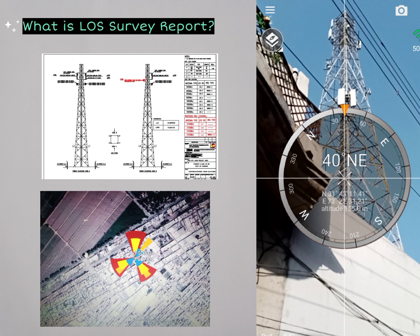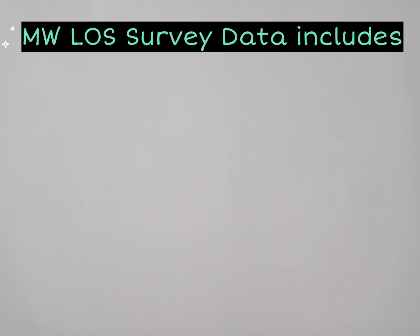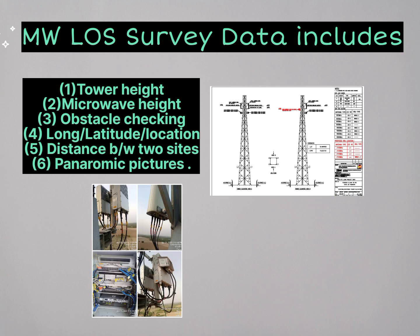The first question is: why do we need this line of sight survey report? The answer is very simple — when we are going to add some microwave links or some sites in our domain, we first start a survey. In the survey we need the following things: tower height, longitude and latitude, location, microwave height, site elevation, and the site address.